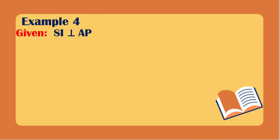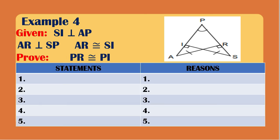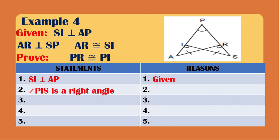For our last example, the givens are: SI is perpendicular to AP, AR is perpendicular to SP, AR is congruent to SP, and AR is congruent to SI. We need to prove that PR is congruent to PI. Statement one: SI is perpendicular to AP, reason is given. Statement two: the right angle created is angle PIS, reason is definition of perpendicularity.